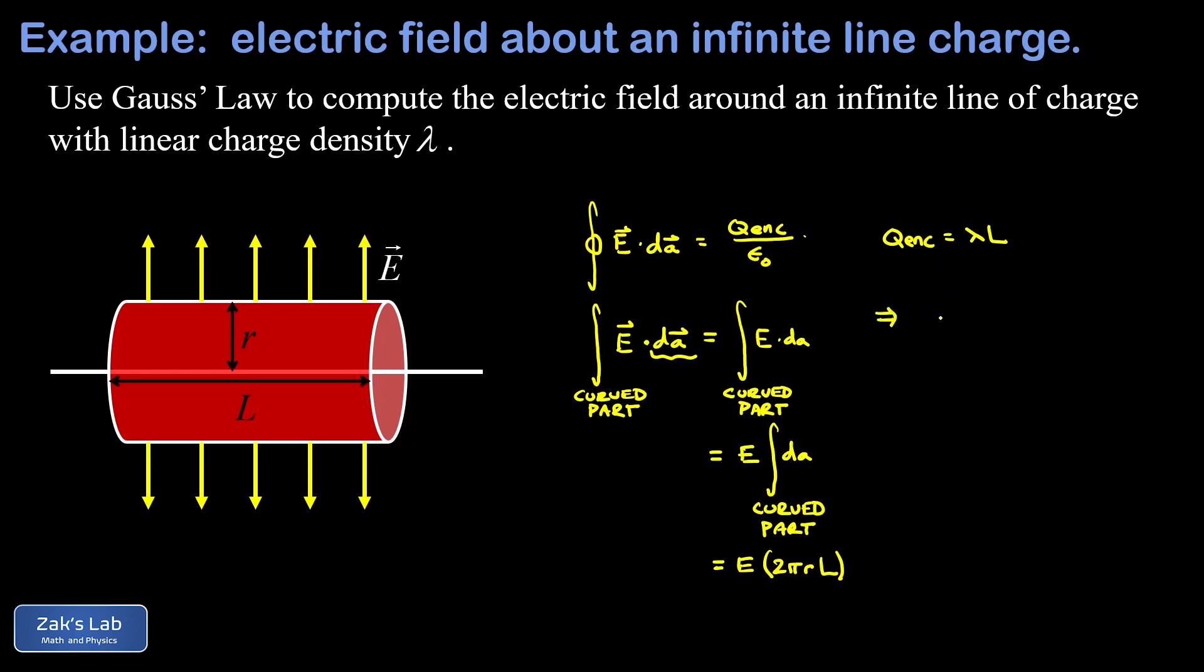Now we can put everything together. Our flux integral turned out to be e times 2πrL. Our enclosed charge was lambda L and we have an epsilon zero in the denominator.